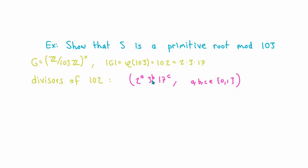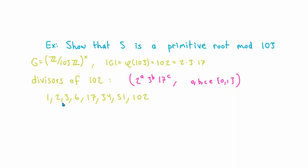By the fundamental theorem of arithmetic, every divisor of 102 must have the form 2^a times 3^b times 17^c, where a, b, and c are non-negative integers each at most 1. That gives two possibilities for each of a, b, c, so there are eight divisors of 102 total. We already know that 5 to the 102 is 1 modulo 103 by Euler's theorem or Fermat's theorem. So all we need to show is that when we raise 5 to any of the other proper divisors of 102, we don't get 1 modulo 103, which would force the order to be 102 and make 5 a generator.